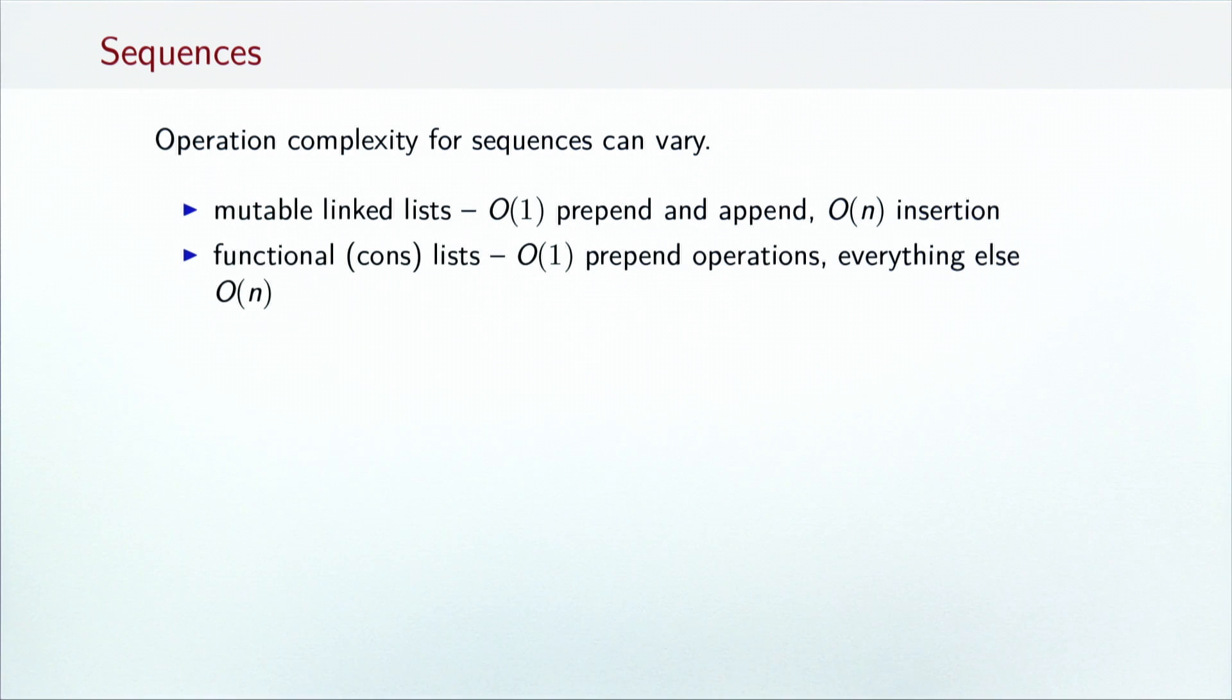Functional linked lists or cons lists have constant time prepends, but since their tail cannot be mutated, all other operations take linear time.